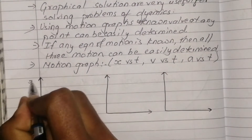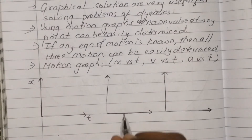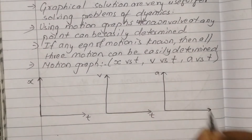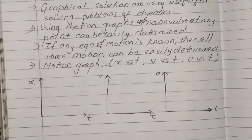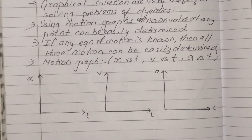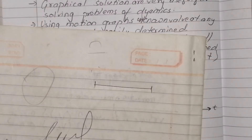This is the position versus time graph, and this is the velocity versus time graph, and this is the acceleration versus time graph. Now, generally, we have to plot the rectilinear motion, and this is the rectilinear path — that is, the straight-line path. In the straight-line path, we have to plot the straight line.